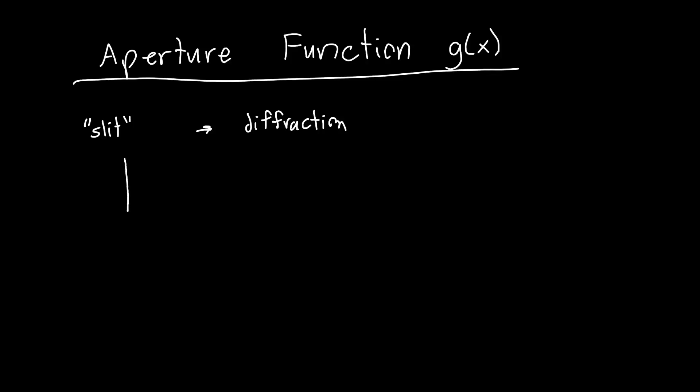In the last video I said if we have a slit that's blocking all light outside of it, this is the x-axis, x equals 0, this is x equals a, or our slit height. The aperture function in this case, g of x, should look like this: it's 0 from minus infinity to 0, equal to 1 from 0 to a, and then 0 again from a to infinity. This is our aperture function for a perfectly open slit.